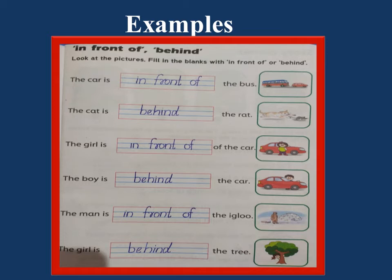Third one: the girl is blank the car. Where is the girl? The girl is standing in front of the car, not behind the car. In front of the car — we can see the girl clearly outside the car, that means she is in front of the car. Fourth one: you can see a boy hiding — we cannot see the boy clearly. That means the boy is at the back of the car. The boy is behind the car. Fifth one: the man is standing where? In front of the igloo. We can clearly see the man standing in front of the igloo.